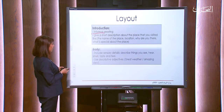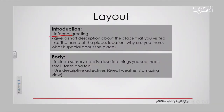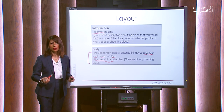Let's move to the second paragraph: the body. Here is where you need to include details — specifically sensory details. Include the five senses as we discussed: things you see, things you hear, things you smell, you taste, and feel. Don't forget to use descriptive adjectives like 'great weather' or 'amazing view,' because you need to put the reader in an actual scene when they read.